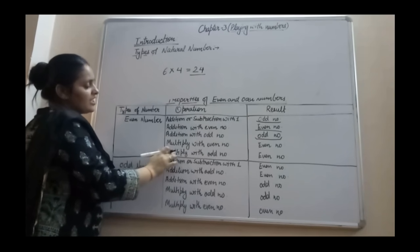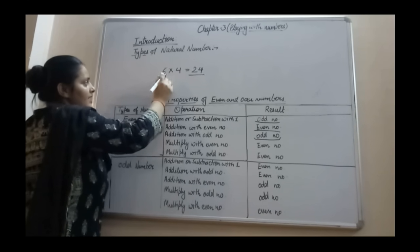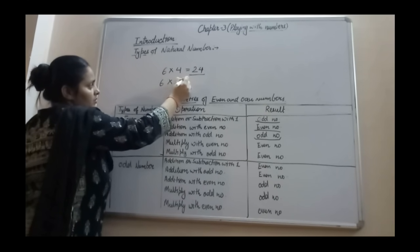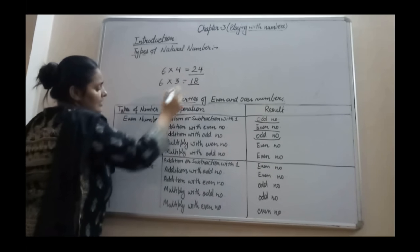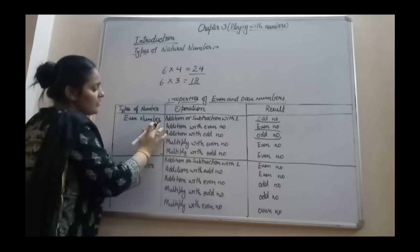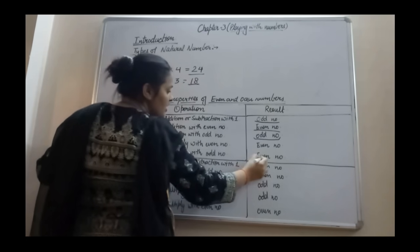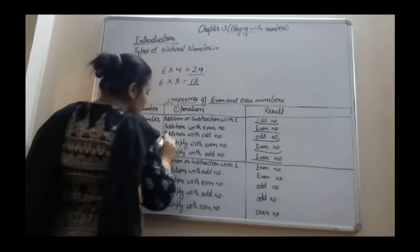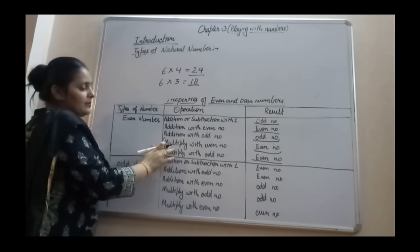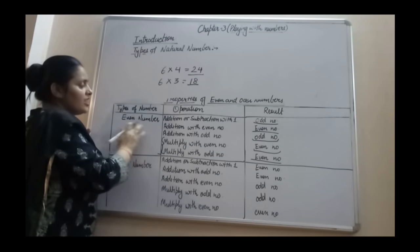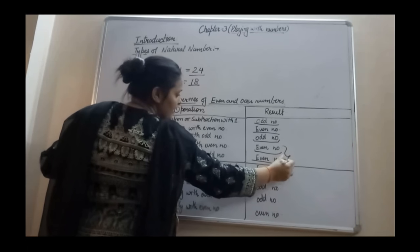Next property: even number multiplied by odd number. Take 6 as an even number and 3 as an odd number. 6 times 3 gives 18, which is also an even number. So when you multiply an even number with an odd number, your answer is an even number. We can conclude that whenever you multiply any number — odd or even — with an even number, your result is always an even number.